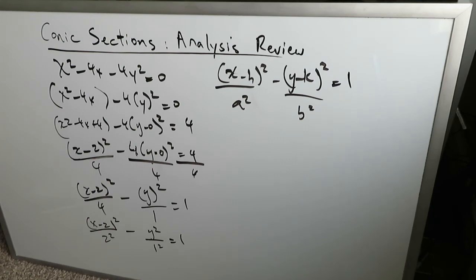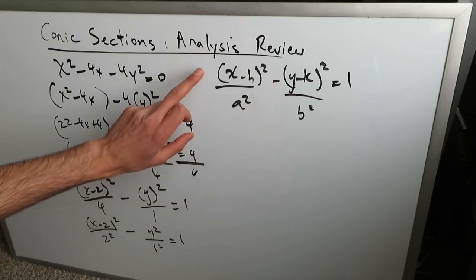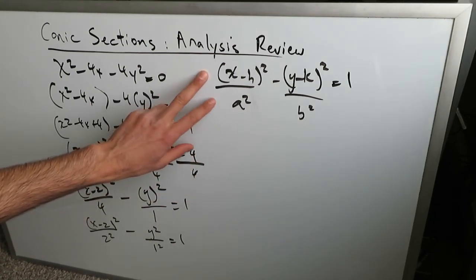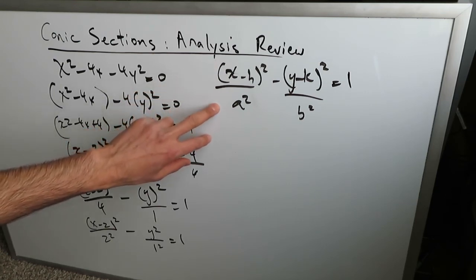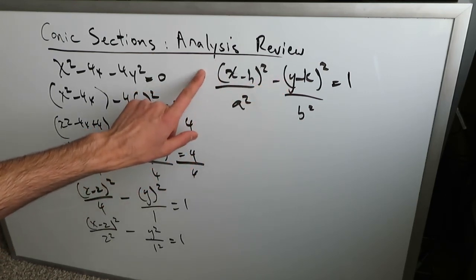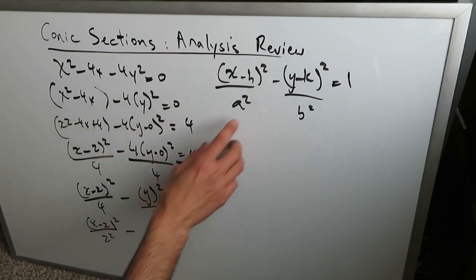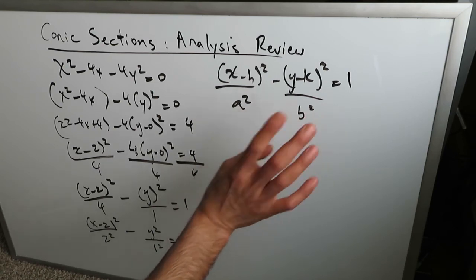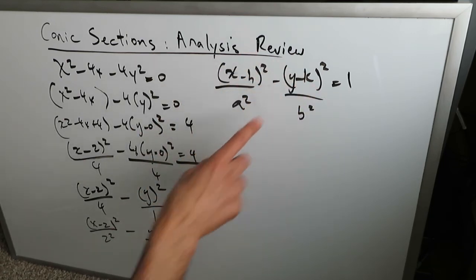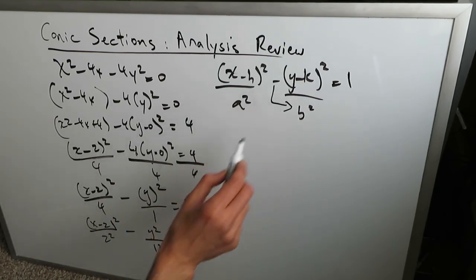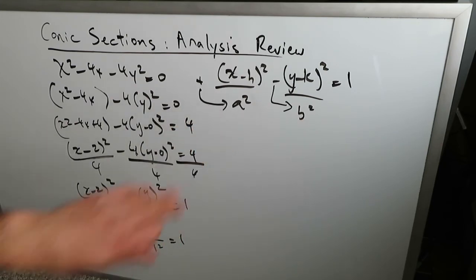Remember, the a value must always be larger than the b value. In a hyperbola, the first term must always have a² and the second term must always have b². With an ellipse, x can land on top of either a or b since both terms are positive. But with a hyperbola, a² is always attached to the positive component and b² to the minus component. So here a = 2, b = 1.